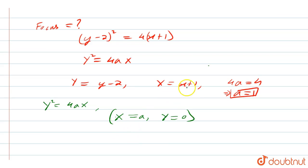Let us put the value, that is x + 1 in place of X. So this will become x + 1 = a. Since a = 1, in place of a we can write 1. And Y = y - 2 = 0.